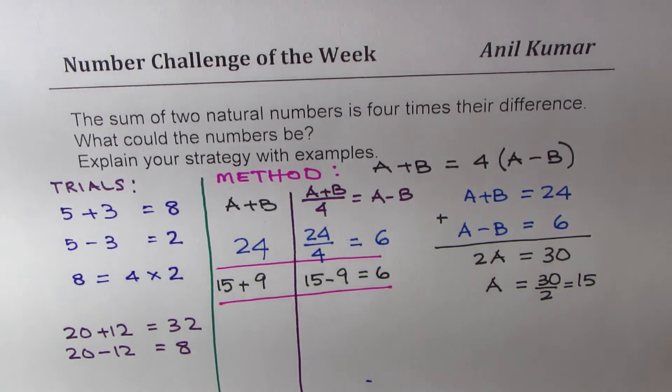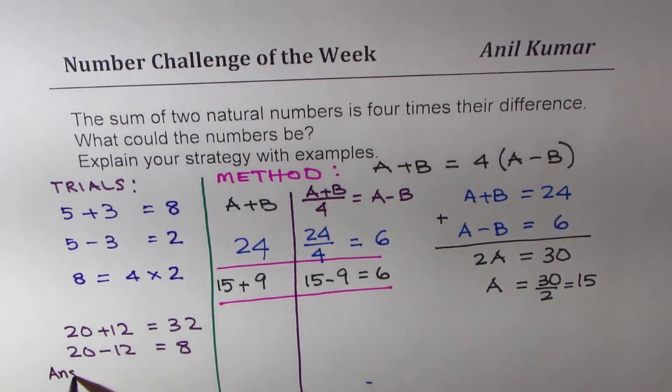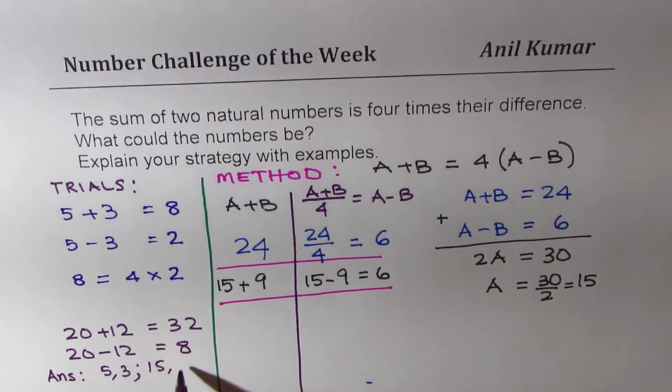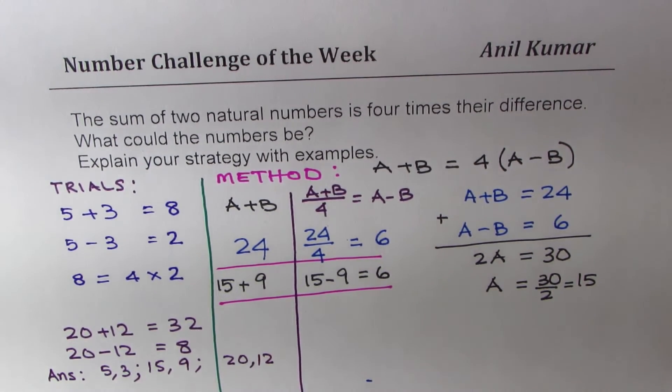So the numbers are 15 and 9. We already have three answers here. Our answers could be, as we have seen, the numbers are 5 and 3—this is one set. Then, we got 15 and 9. We also got numbers as 20 and 12.